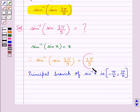And this 3 pi by 5 does not belong to the closed interval minus pi by 2 to pi by 2.